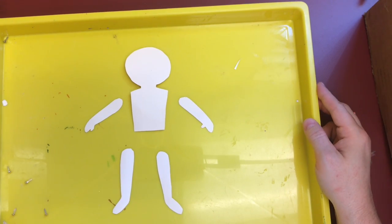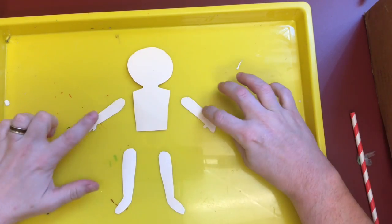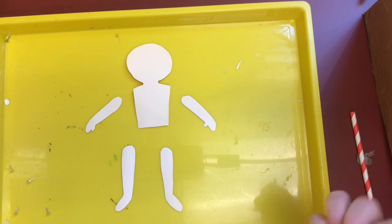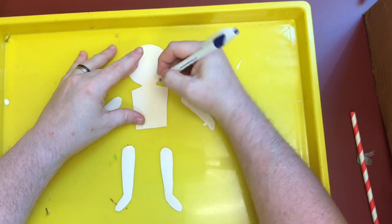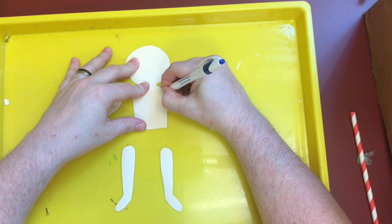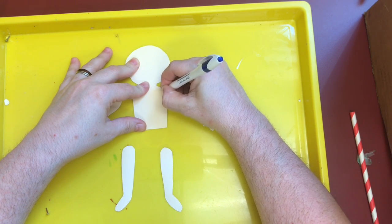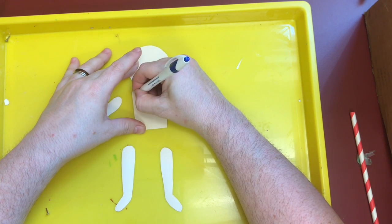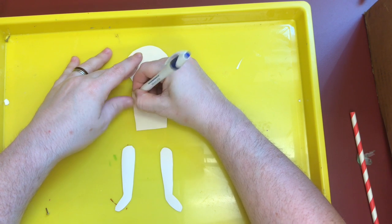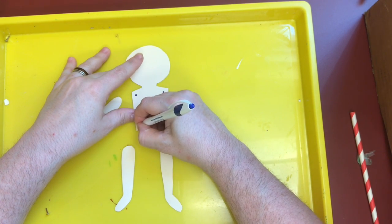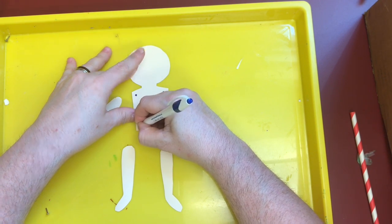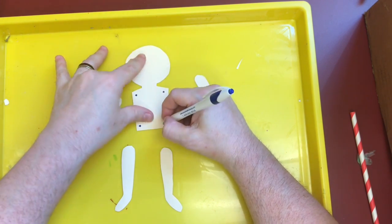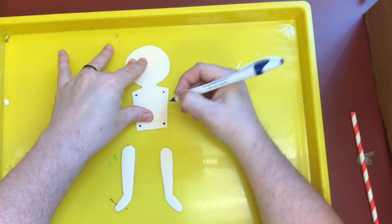Now we need to attach our arms and legs to the body. How we're going to do that is I'm going to draw some dots a little ways in from the corners of my puppet's body. We're going to do all four corners and you don't want it to be too close to the edge because you don't want it to rip.